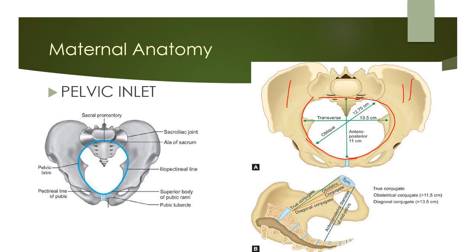The pelvic inlet in most cases is transversely oval. Here a gynecoid pelvis is shown — the transverse diameter of the inlet is 13 cm and the anterior-posterior diameter is 11 cm, making it slightly more transversely oval compared to the anterior-posterior dimension.